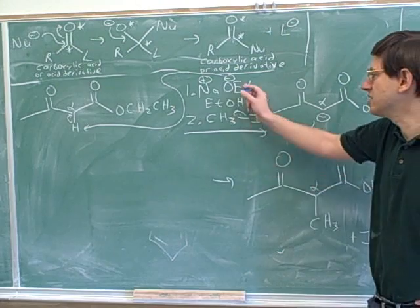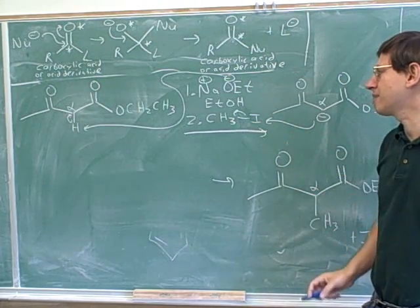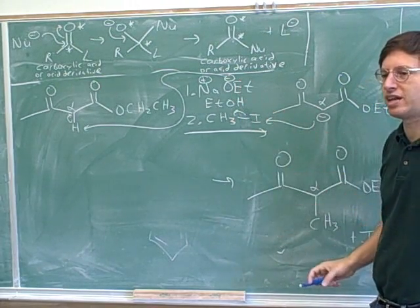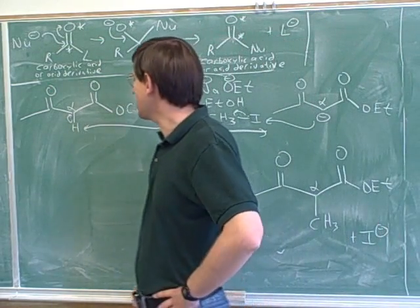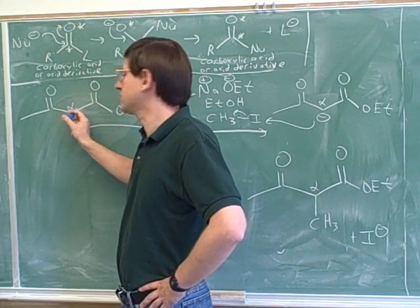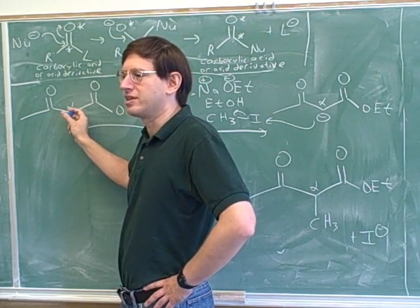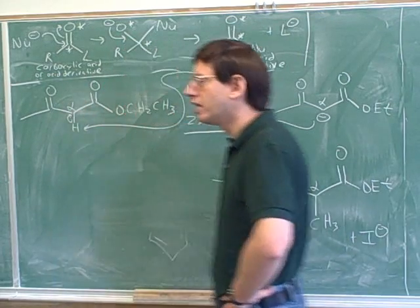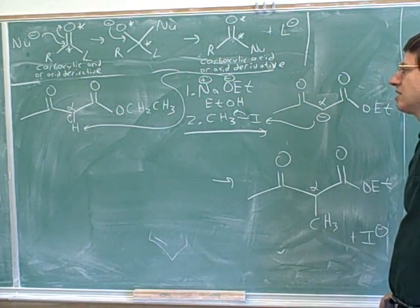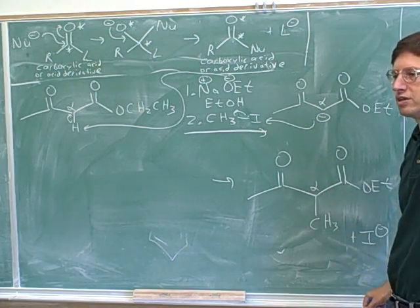That would be four steps total, right? Deprotonate, carbon chain. Then step three would be add base again to deprotonate again. And then step four, we could add another carbon chain and another SN2. How many times can you do that? Well, we can only do it twice because this only started with two hydrogens. This alpha carbon started with two hydrogens. So, we could do this process twice and add two more carbon chains to it.